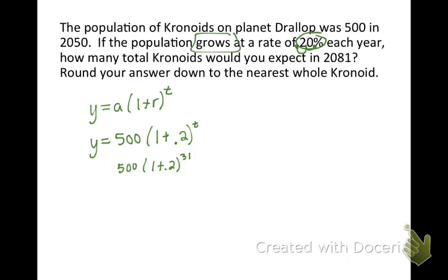Now, if you grab a calculator and put that in, which I didn't before starting this video, so you have time to do it without pausing. We get out 142,425.78 chronoids. The direction said to round to the nearest whole chronoids, so we're going to say 142,426 chronoids.